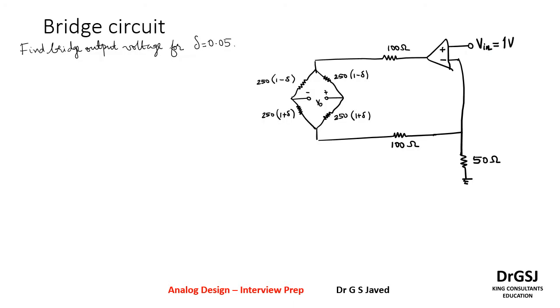In this circuit we see the bridge circuit connected in a feedback along with an op-amp. The problem definition is to find the bridge output voltage for a delta of 0.05.